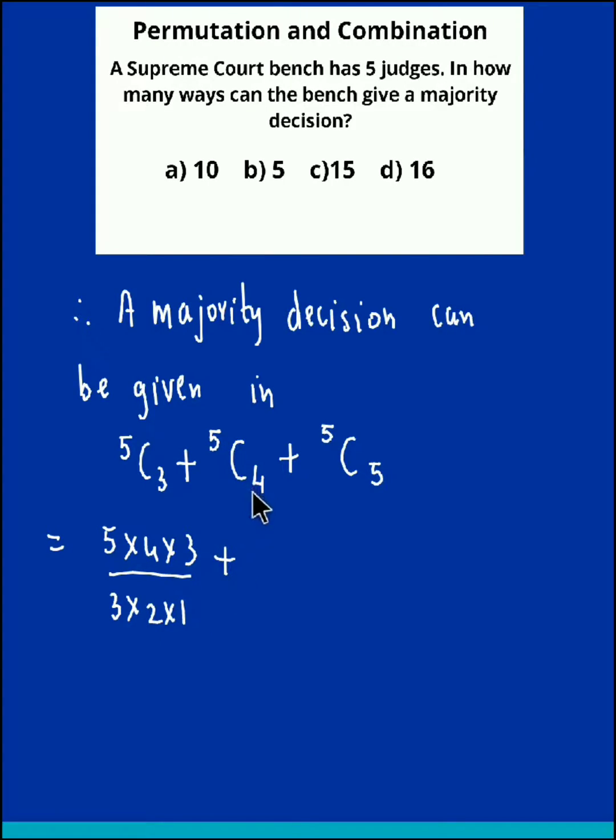Now, 5C4 is equivalent to 5C1, so this 5C1 is nothing but 5. And 5C5 is 1. So if we simplify this, the 3 gets cancelled, and we have 5×2 = 10, plus 5, plus 1. So the total answer is 16.